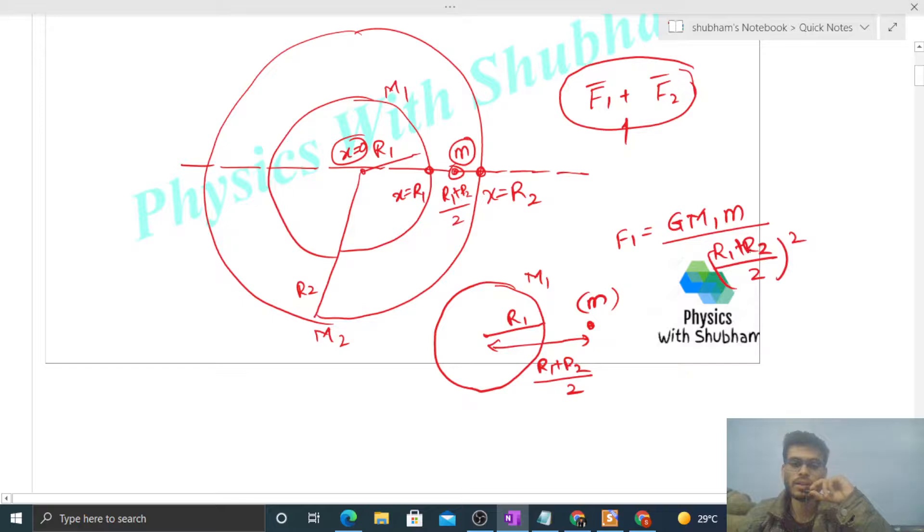Because this particle is outside this shell, you can assume the entire mass of the shell to be concentrated at the center. So this will be the magnitude of F1.